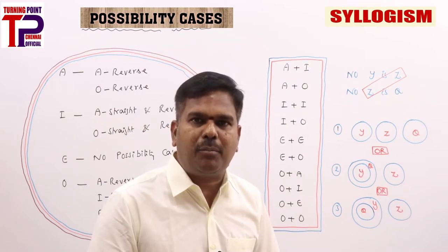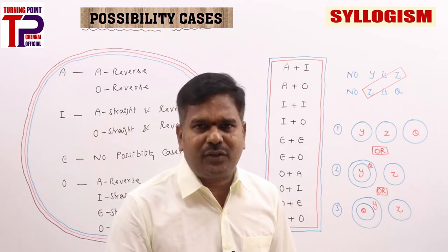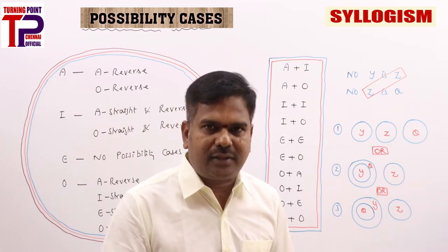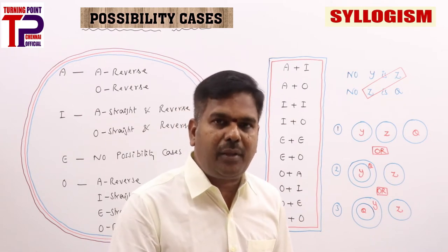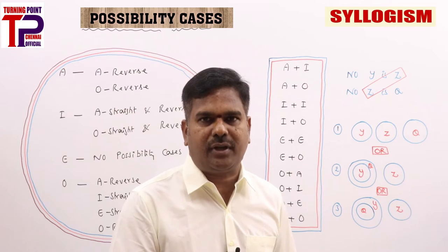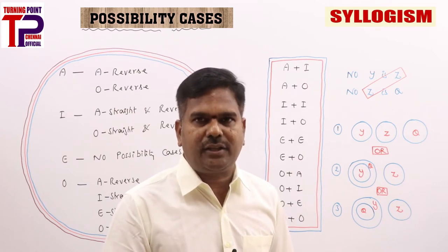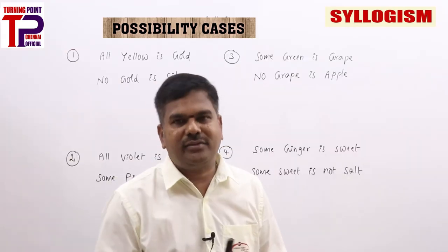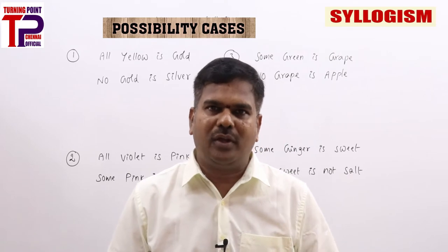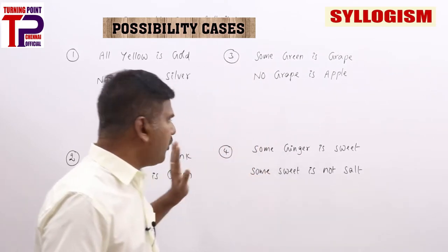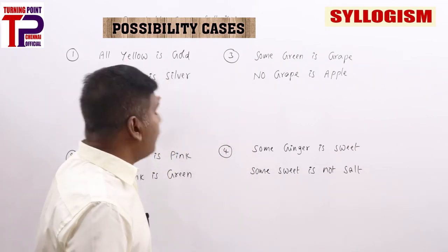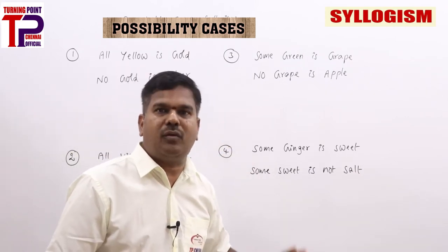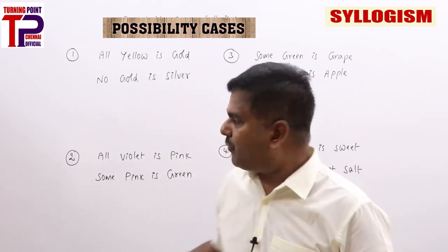You just need to put a tick mark. We will discuss with many examples to make sure you understand possibility cases properly. We will first discuss with examples, then go ahead with many problems from previous year question papers and our material. There are four questions — write what conclusions you will get, and also what possibility cases you will get from these two statements.